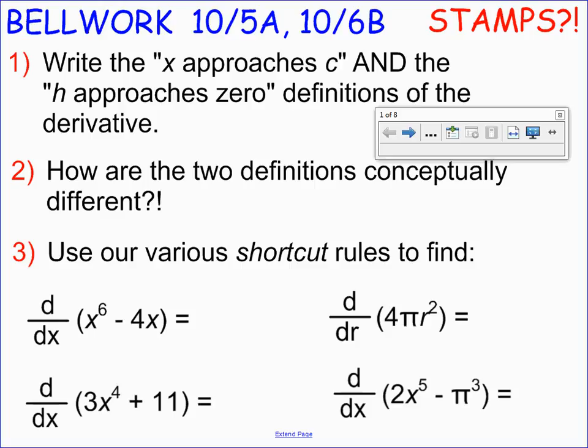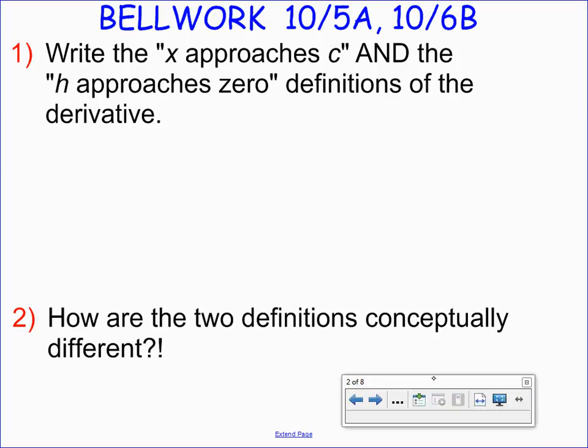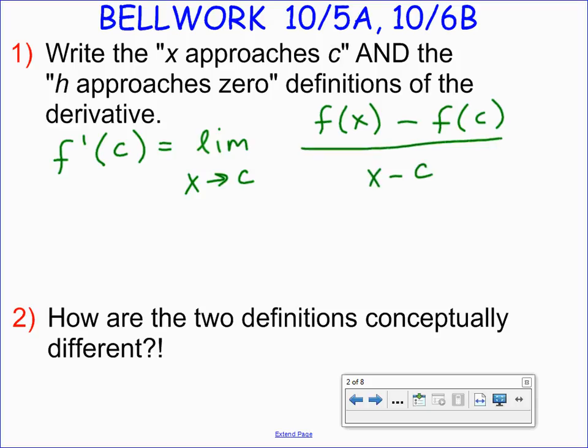At this stage in your mathematical careers, we've generated two different definitions for the derivative. While they're similar, they are different as well depending upon how we interpret them. So we're going to go ahead and write the x approaches c definition and the h approaches zero definitions of the derivative. And then how are the two definitions conceptually different? We'll share with the class our x approaches c definition with a limit. What does that look like? Jake?